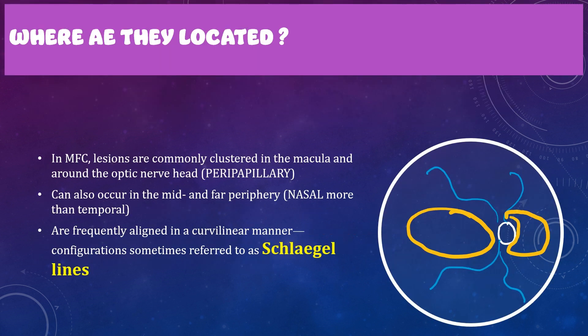In multifocal choroiditis, the lesions are clustered in the macular region and around the optic nerve (peripapillary lesions). They are usually present in the mid and far periphery, more clustered on the nasal side of the optic disc compared to the temporal side. Frequently, they are aligned in a curvilinear configuration, sometimes referred to as Schlegel lines.